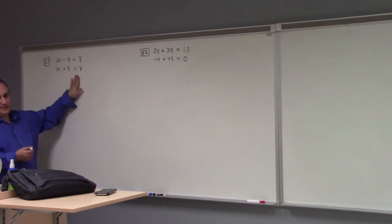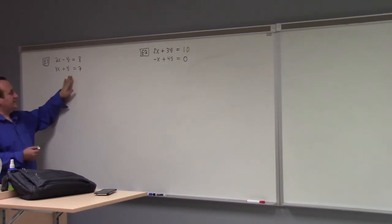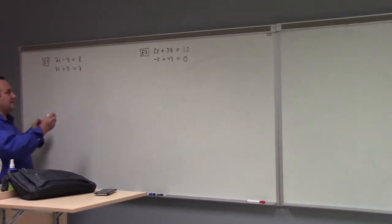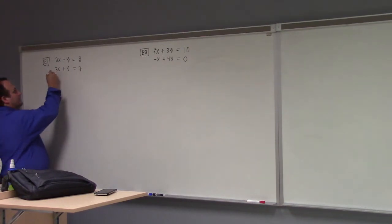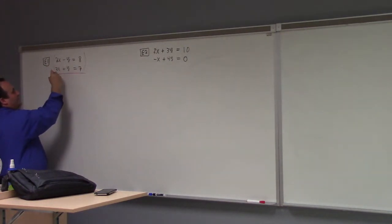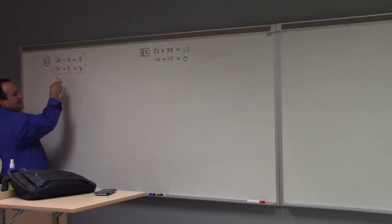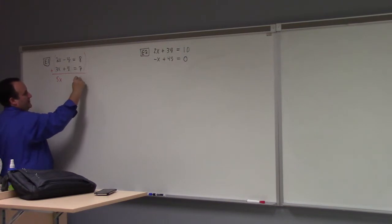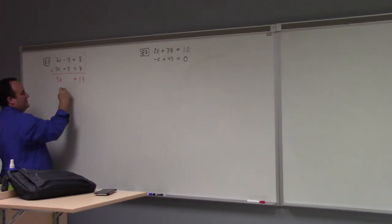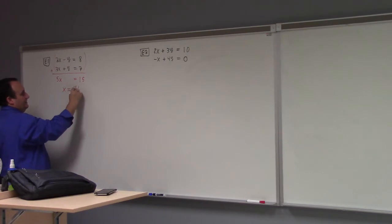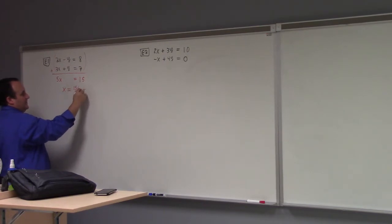So to eliminate a variable, what can we do here? How about this: we add these equations. If we add these two equations, what happens? We get 5x — the y's cancel — equals to what? 15. So x equals 15 over 5, also known as 3.